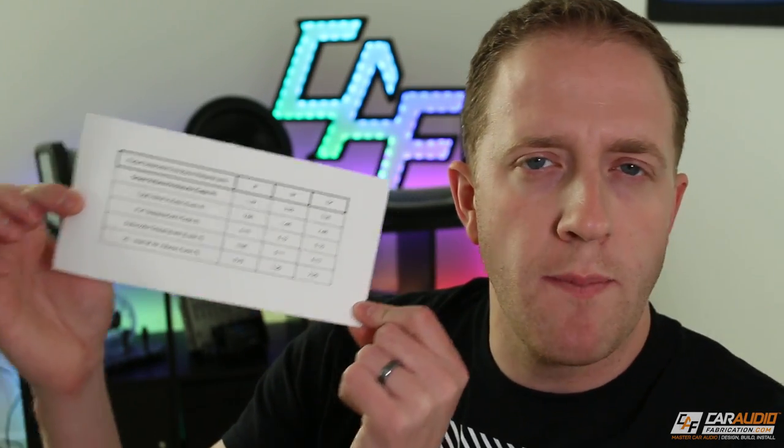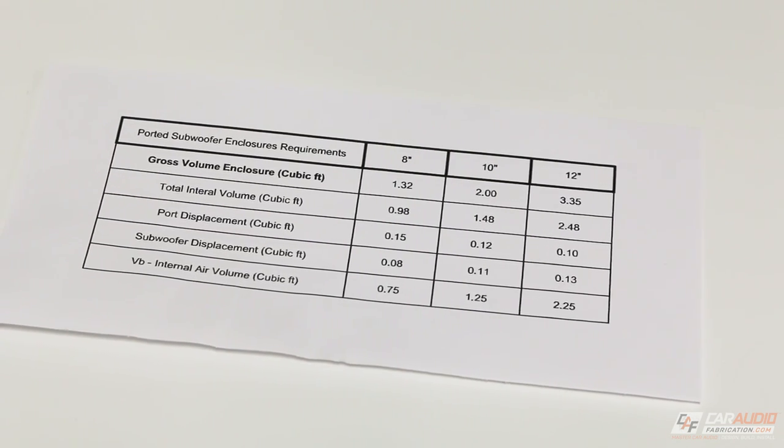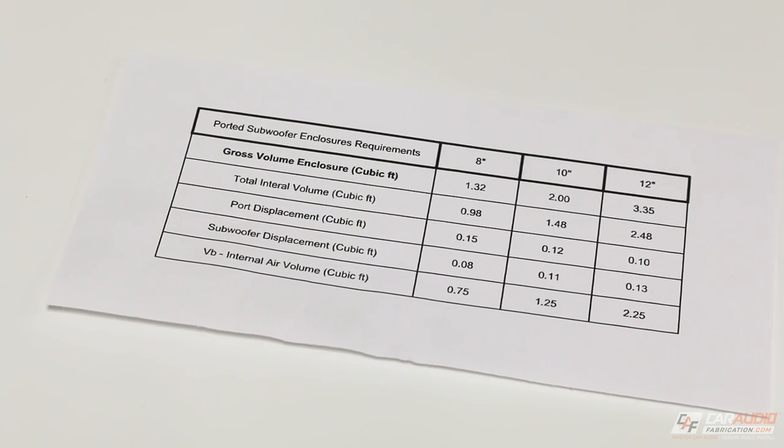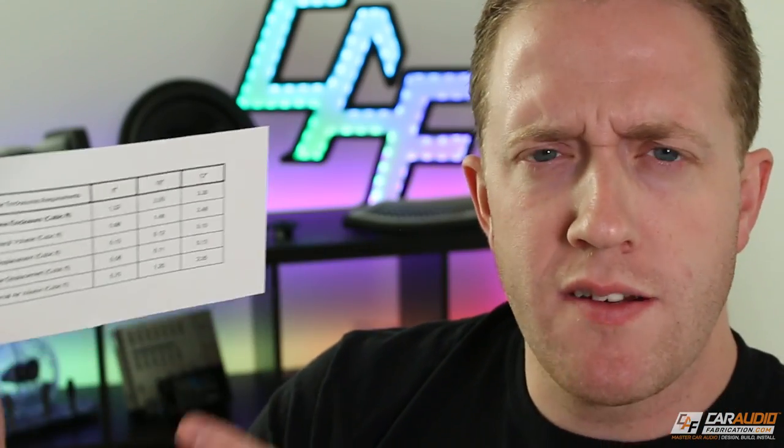So in summary, the air volume matters because it controls how the subwoofer reacts to the electrical input and the acoustic output it creates. When we open up a subwoofer manual or look at specs online, we get a list of volumes that the manufacturer provides as a starting point for designing our enclosure. These air volumes are an average value that leads to a good response and is safe for the subwoofer. The problem is there are multiple different definitions for the way air volume is listed, and if you don't understand what each one means, you're going to be off to a bad start.